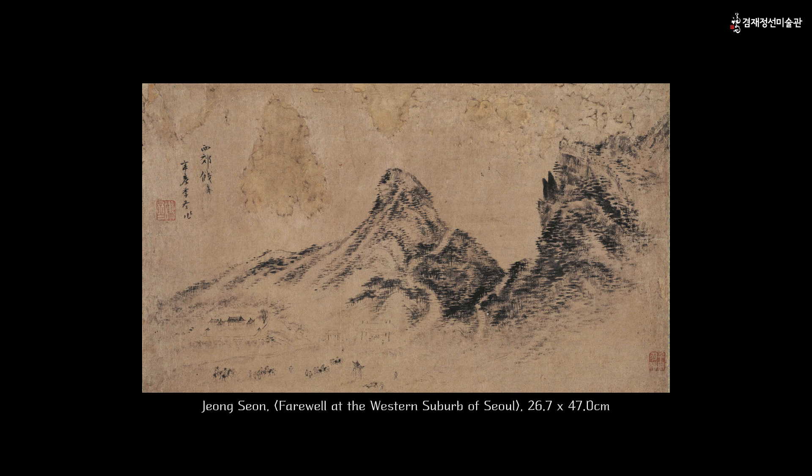In this painting, Moaksan Mountain is shown retreating to the left, while Inwangsan Mountain occupies the center. On the right, you can see the mountain range extending from Inwangsan Mountain towards Sajik Park.